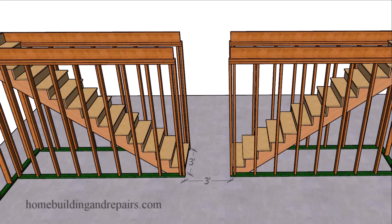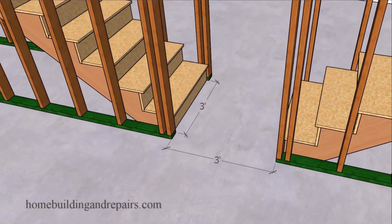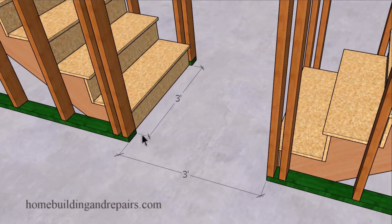You better check with your local building codes first before designing a building where you have two sets of stairs that meet on a floor landing or a platform next to each other, and would look something like this. And you're trying to figure out the minimum distance they need to be away from each other.